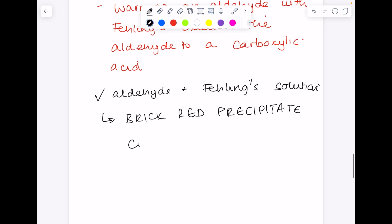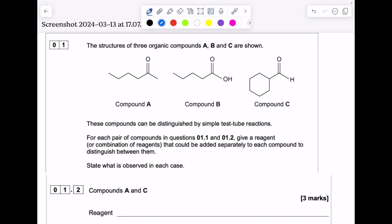And the reason for that is because those copper 2 ions are reduced by the addition of an electron to Cu plus, which has the appearance of a brick red precipitate. So let's look at a past paper question.